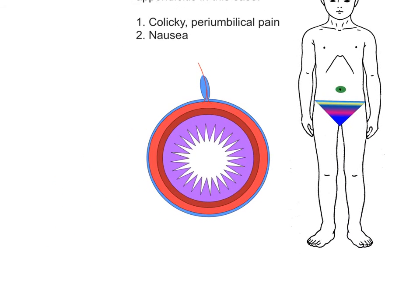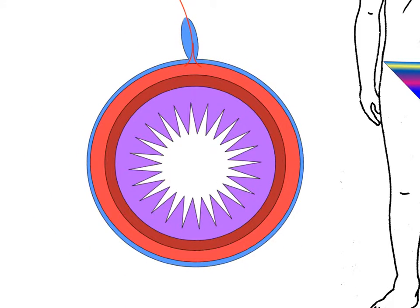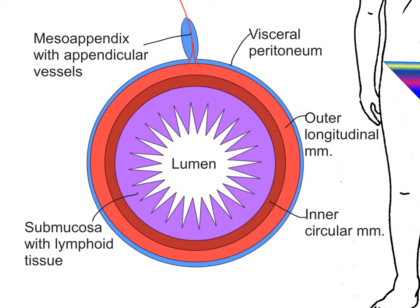In cross-section, we can see the various layers of the appendix wall. Working from the outside towards the lumen: the serosa, which forms the visceral peritoneum, is continuous with the meso-appendix superiorly. After the peritoneum, we see the outer longitudinal layer of muscle, continuous with the tenea coli of the colon, and then the inner circular layer of muscle between the submucosa and the outer longitudinal layer. The submucosa contains a lot of lymphoid tissue, and the mucosal surface is lined with epithelium, with the crypts of Lieberkühn at the base.